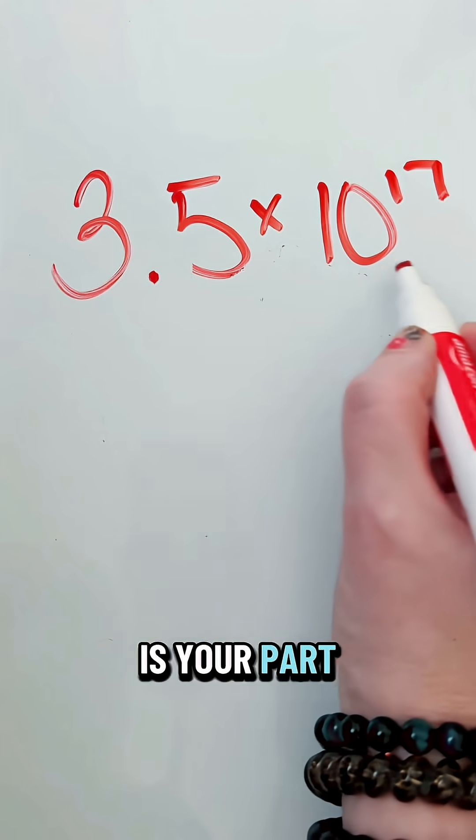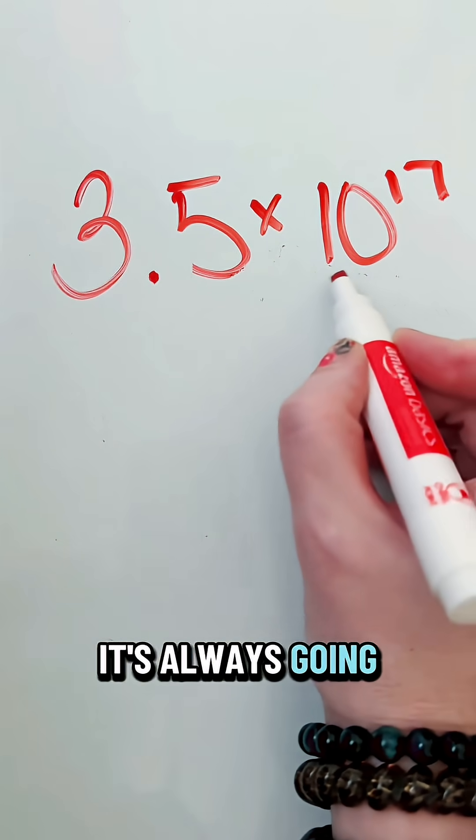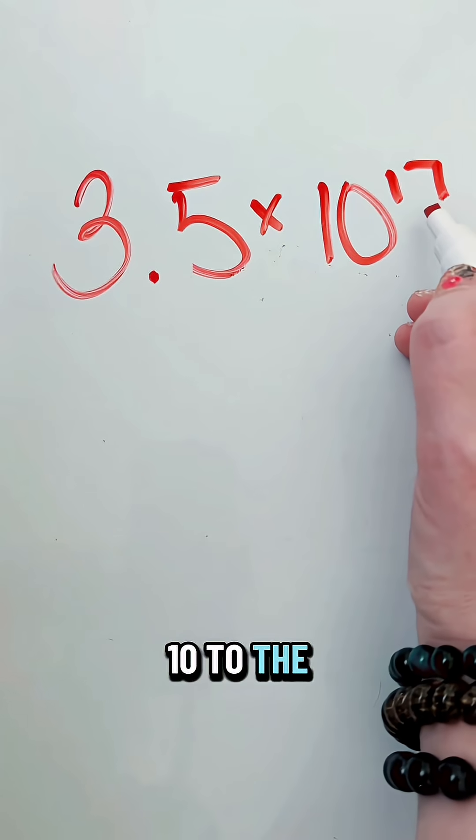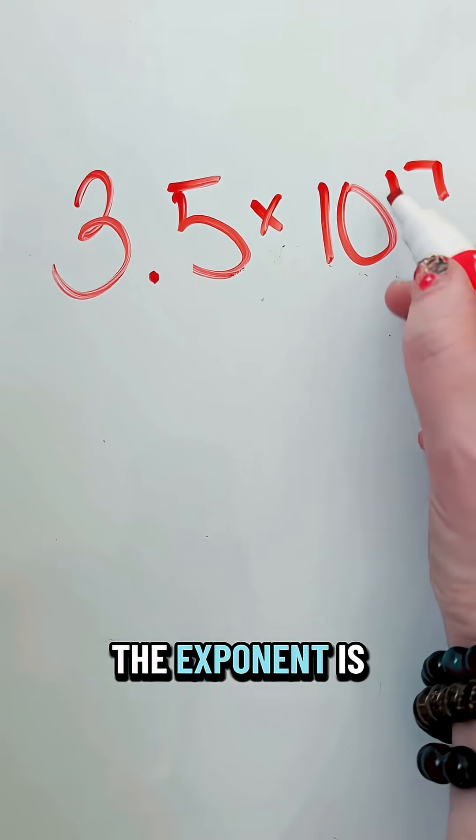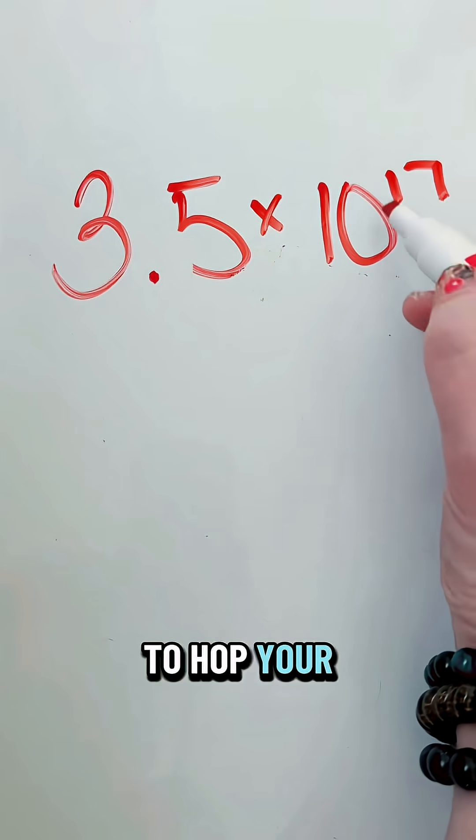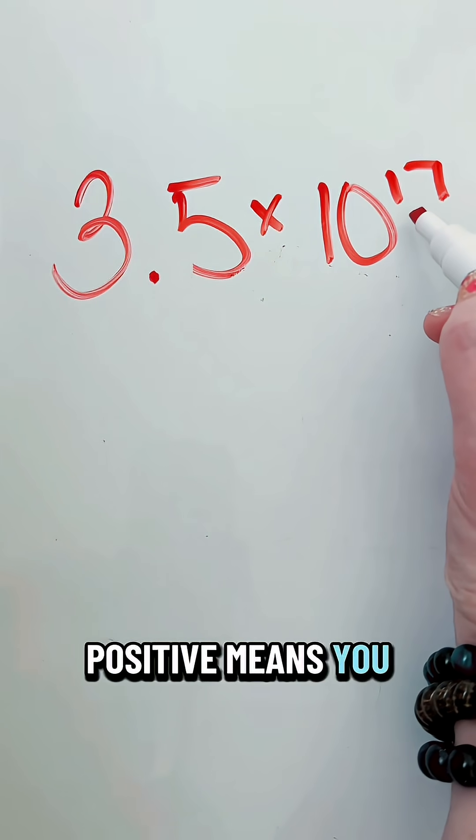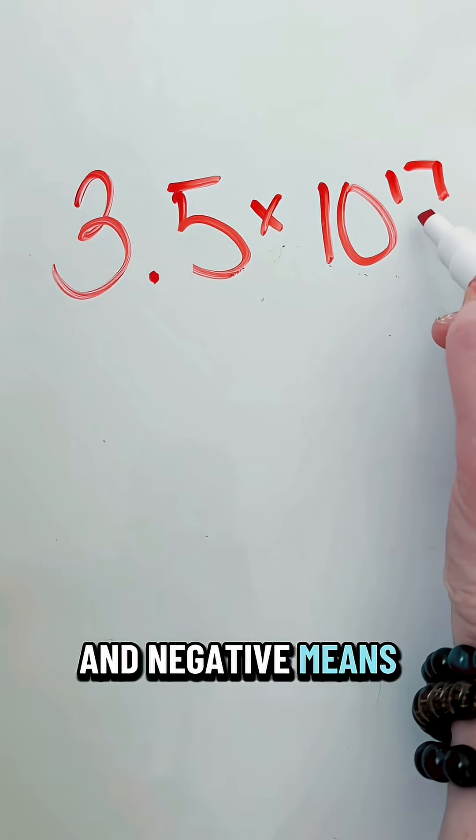The second part is your part with the exponent. It's always going to be times 10 to the something. The exponent is telling you where to hop your decimal point. Positive means you hop to the right and negative means you hop to the left.